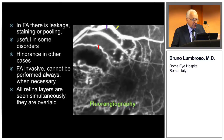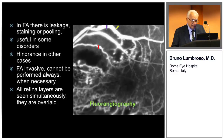In fluorescence angiography we have leakage, staining, or pooling. This is very useful in some disorders but can be a hindrance in other cases. Fluorescence angiography is invasive and cannot always be performed when necessary. All layers are seen simultaneously — they are overlaid — as shown in examples of staining, pooling, and leakage.